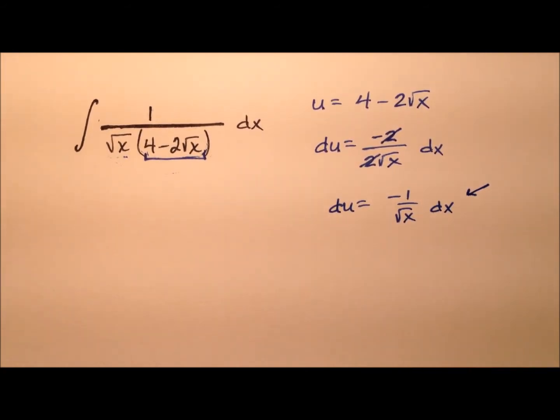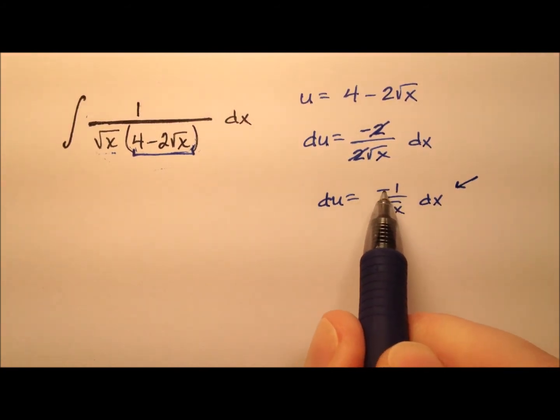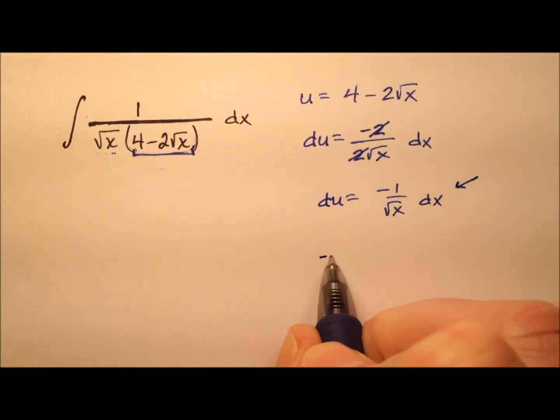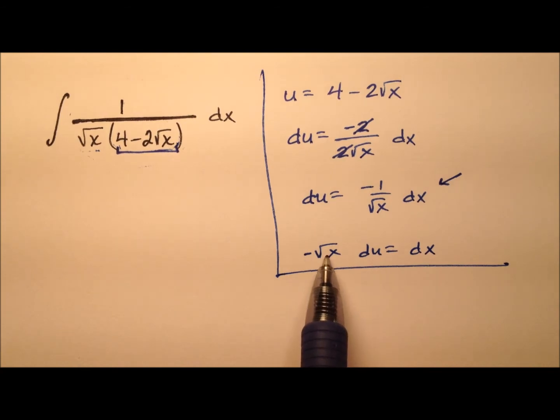Solving for this dx so we can make that substitution, I'll multiply both sides by the opposite of the square root of x. So I end up with the opposite of the square root of x times du equals that dx.